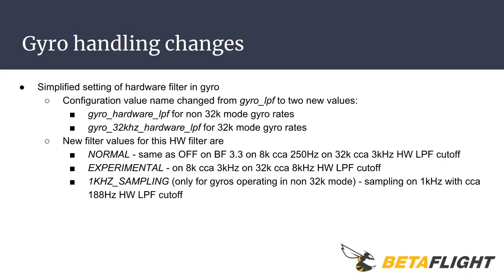Gyro handling changes. The configuration of the hardware low-pass filter for the gyro was changed. The gyro LPF value is now split into two new values: one for non-32K mode gyro rates and the second for 32K mode gyro rates. The new filter values for this hardware filter are: normal (same as off in Betaflight 3.3), experimental, and one kilohertz sampling mode. The difference between normal and experimental is in the cutoff frequency of the hardware low-pass filter, which in the experimental case is much higher than in the normal setting.